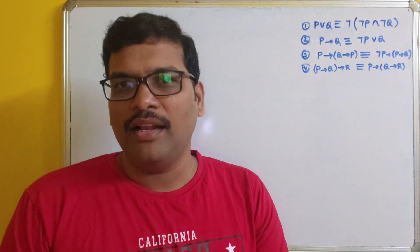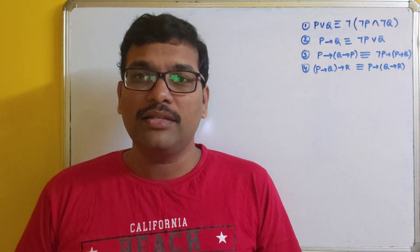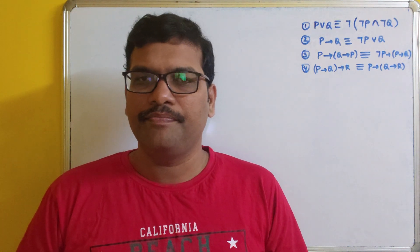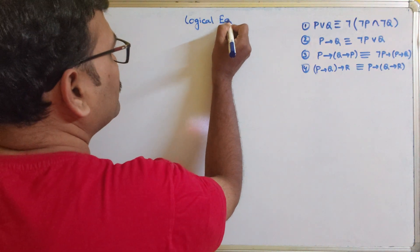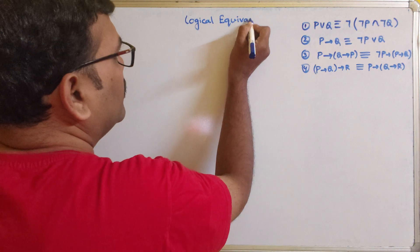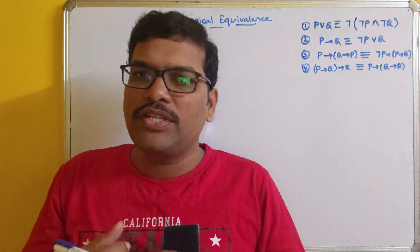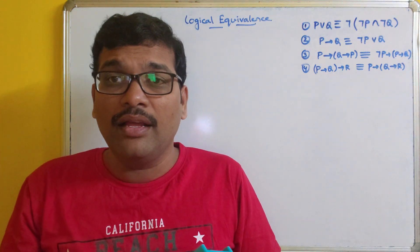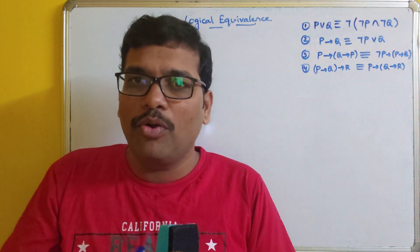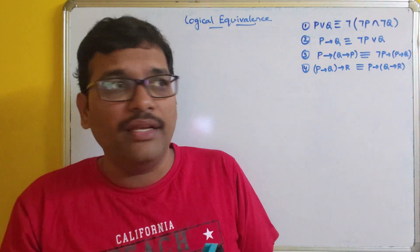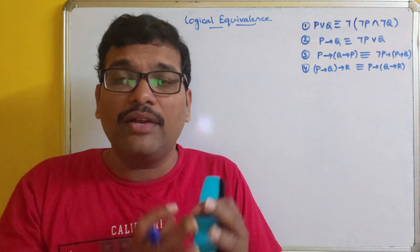Hello friends, welcome back to our channel. We'll see one more concept in discrete mathematics: logical equivalence. In our previous session we have seen what is a proposition, simple and compound propositions, how to find the truth table for compound propositions, and after that we have seen tautology, contradiction, and contingence.